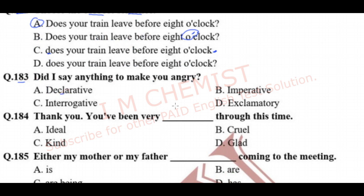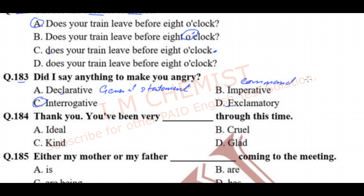Question number 183: 'Did I say anything to make you angry?' — what type of sentence is this? Is it declarative, imperative, interrogative, or exclamatory? As it is a question, this is an interrogative sentence. A declarative sentence is a general statement. An imperative sentence is a command or request. An exclamatory sentence expresses extreme happiness, anger, or sadness.